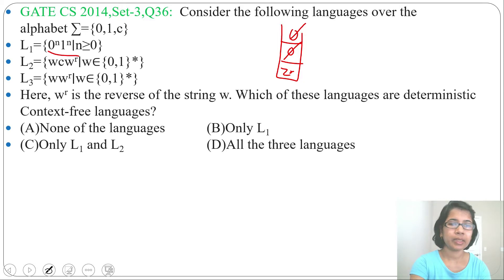Next, w c w^r. For w you will push, for c you will skip, and for w^r you will pop. This is a DPDA. There is no confusion. For every input alphabet and top of stack symbol, there is just one transition. So this is a DPDA.